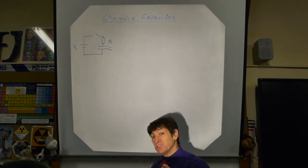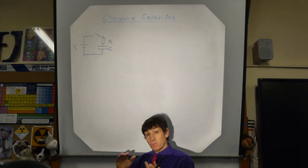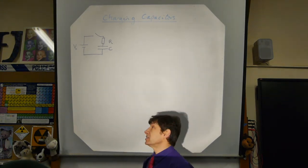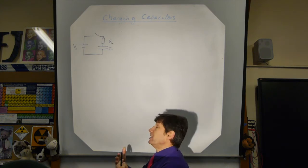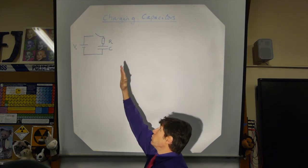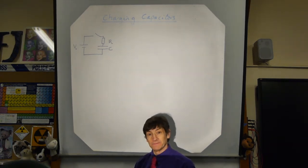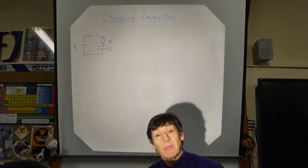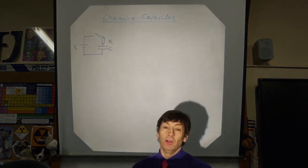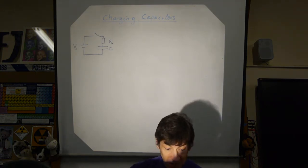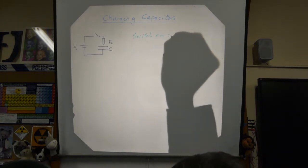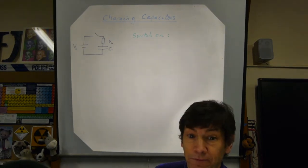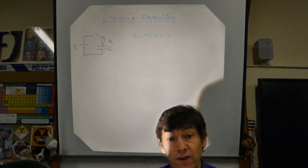The capacitor is not charged, so I'd like you to think about one of the plates — the one that becomes negative. It's got no extra electrons on it, so electrons will rush in. But as the electrons build up on that plate they will repel the ones trying to come in, so fewer and fewer electrons will come in per second. Let's now analyse what happens when we close that switch.